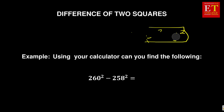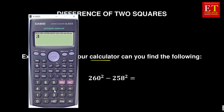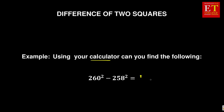Please take note that we are looking only at the difference of two squares. Let us start by looking at the first example. It says: using your calculator, can you find 260 squared minus 258 squared? The answer that I'm getting is 1036. So that is the answer we got using our calculator.